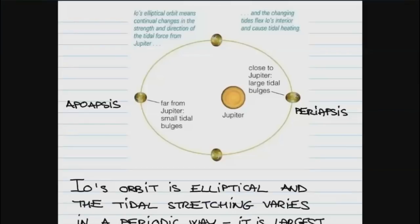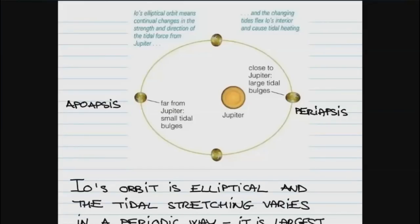The tidal force, just like the force of gravity, depends on distance as one over distance squared. At periapsis where the distance is shortest, the tidal force is greatest and it stretches Io, trying to pull it apart. At apoapsis, because of the increased distance, the amount of tidal stretching is reduced. So Io is perpetually being flexed — stretched and then it relaxes, stretched and then it relaxes. The energy used to stretch it is eventually converted into heat, which melts the interior of Io and is the reason why it has a molten interior and shows volcanic activity. This effect is called tidal heating.